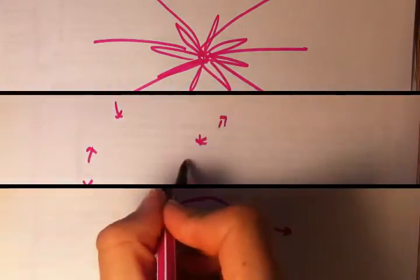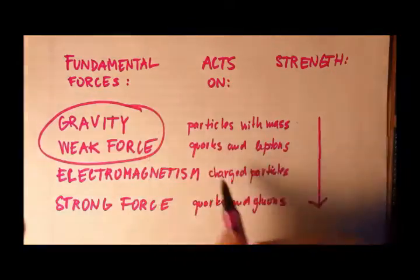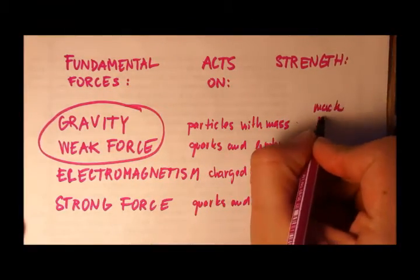Since neutrinos have mass, they also interact gravitationally, but gravity is the weakest of all known forces.